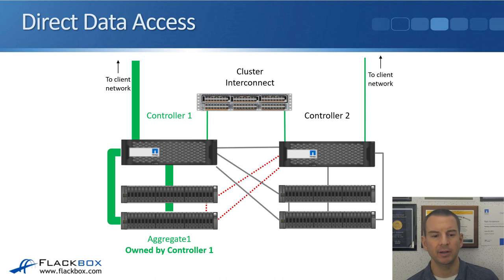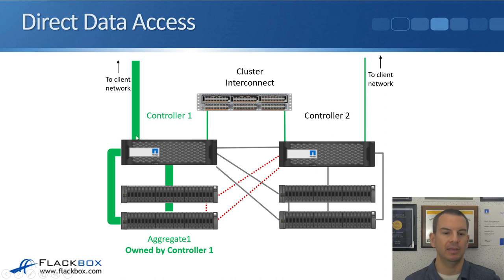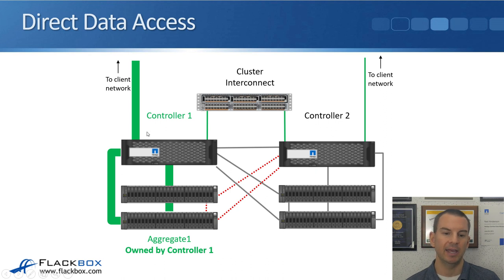First example: a client wants to read or write data on aggregate 1, which is owned by controller 1, and that incoming connection terminates on controller 1. Let's say it is NFS, and the incoming connection hits an IP address homed on controller 1. The traffic comes in over the data network, hits controller 1, and then controller 1 reads or writes to the disks over its SAS connections.